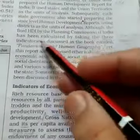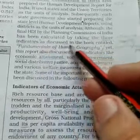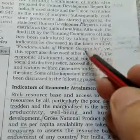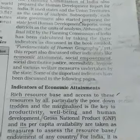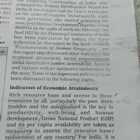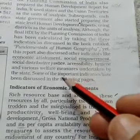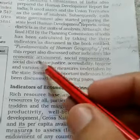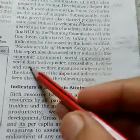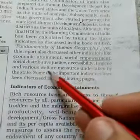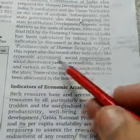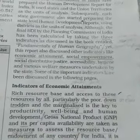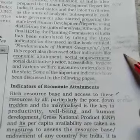Planning Commission of India calculates India's HDI using three indicators. The three main parameters are Economic, Health, and Social Empowerment. Additionally, the Planning Commission uses other parameters like Economic Attainment, Social Empowerment, Social Distributive Justice, Accessibility, Hygiene, and Various Welfare measures undertaken by the state. States use these indicators alongside the three core ones to calculate their Human Development Reports.